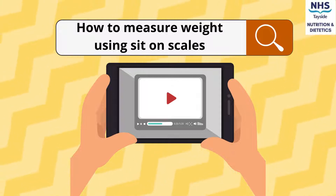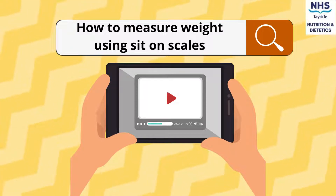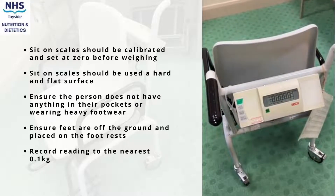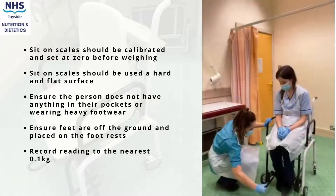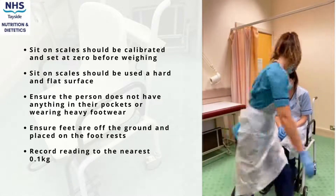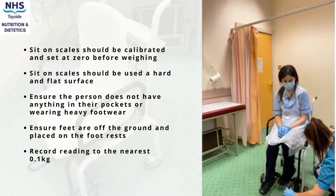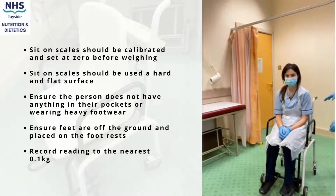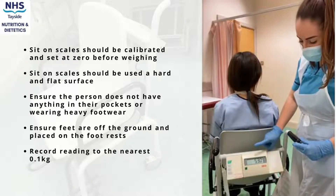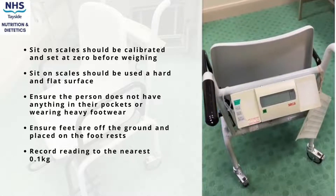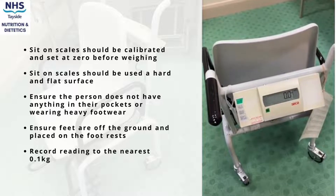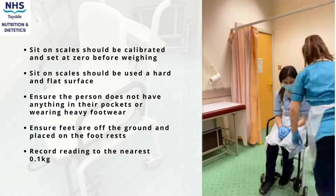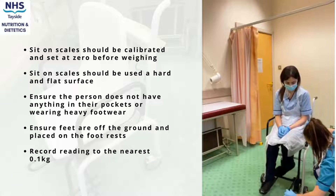For sit-on scales, all scales should be calibrated and placed on a hard, flat surface free of hazards. Before weighing, ensure nothing is in their pockets and note any heavy clothing. Once the person is comfortably in the chair, ensure their feet are on the footrests. If they have extra equipment such as a catheter bag, note whether it was empty or full — this helps ensure each weight check is accurate. Once sitting still, record the weight to the nearest 0.1 kg.